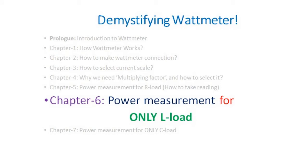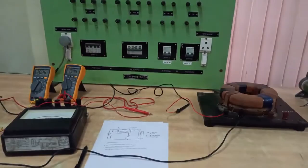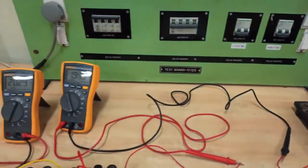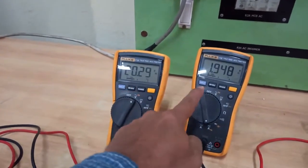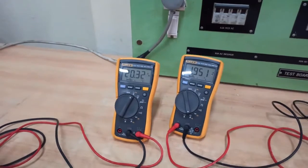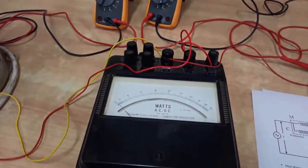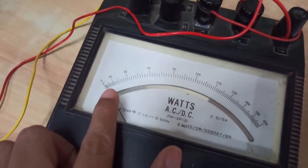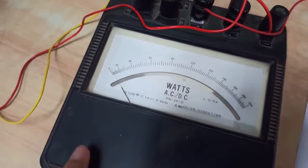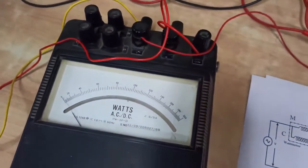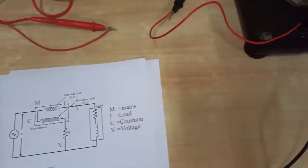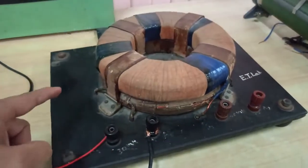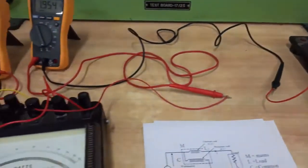Now let's see what the wattmeter reads when we connect an inductor. An inductor has been connected in this part of the circuit. The voltage reading is 20 V and current is approximately 2 A, giving an apparent power of 40 VA. The wattmeter pointer is at almost one division, with each division worth 2 units and multiplying factor 4, giving approximately 8 W. Ideally this should be zero, but the inductor has parasitic resistance and core losses, which are reflected in the reading.